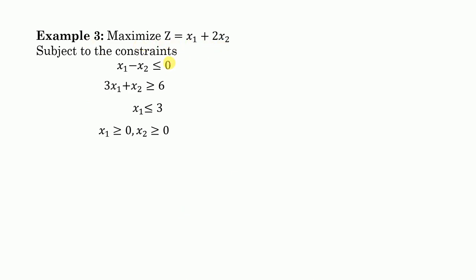First we convert these inequalities into equations, then we draw these straight lines in a two-dimensional plane. Starting with the first equation, this can be written as x1 minus x2 equal to 0.